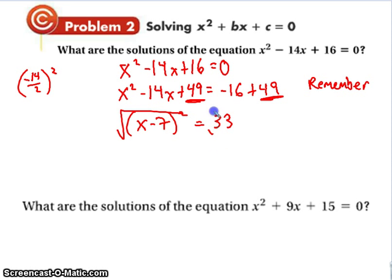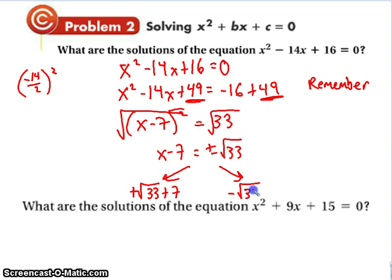And then we know how to do this. We take the square root of both sides. So x minus 7 is equal to positive or negative the square root of 33. And you can solve the rest. Remember, we'll have two answers. One of them will be positive the square root of 33 plus 7. The other one will be negative the square root of 33 plus 7. So that leads us to two solutions.